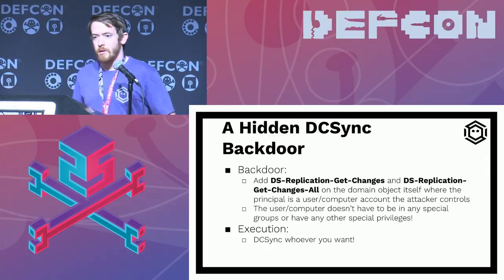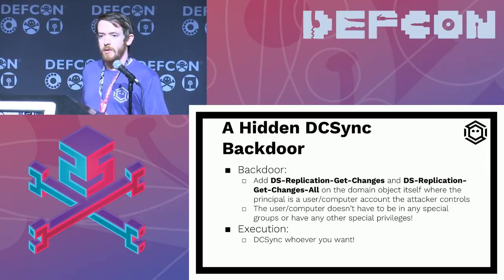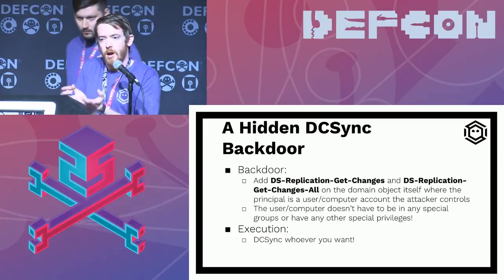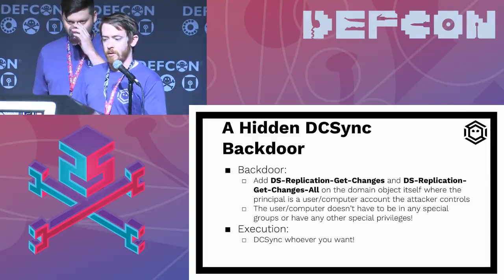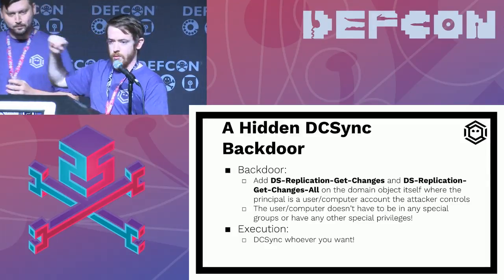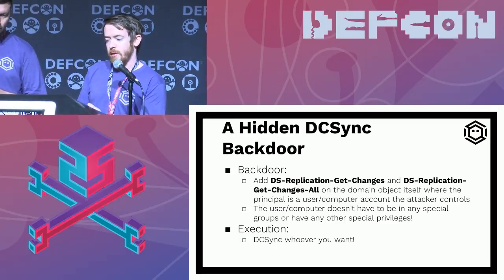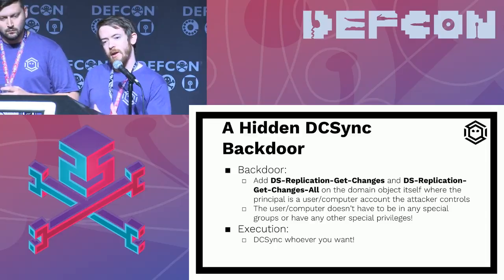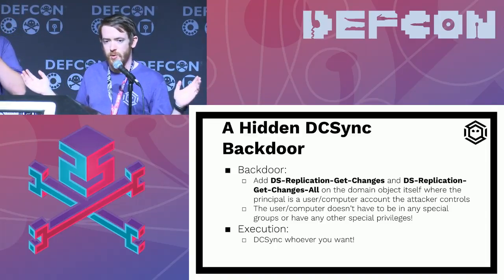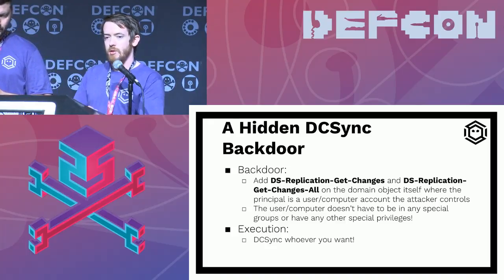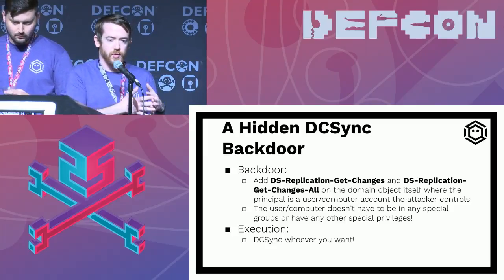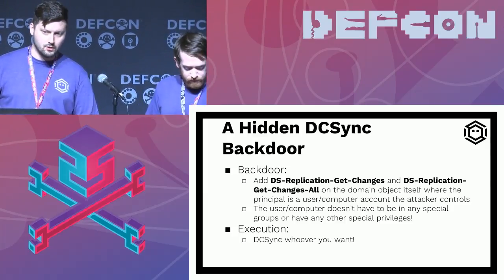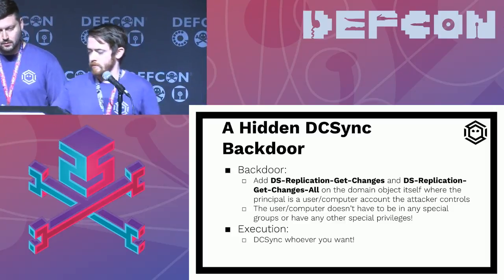Case study one: you don't need to be domain admin to DC sync. DC sync is entirely dependent on two ACEs on the principal domain object. To implement the backdoor, we add DS-Replication-Get-Changes and DS-Replication-Get-Changes-All rights to the domain object for an attacker-controlled user who is not in any privileged groups — just a newly created stock user. That user then has the ability to DC sync any user's account forever, unless defenders find and remove those rights. One important note: you can do DC sync remotely — you don't need code execution on a domain controller, just any domain-joined system.